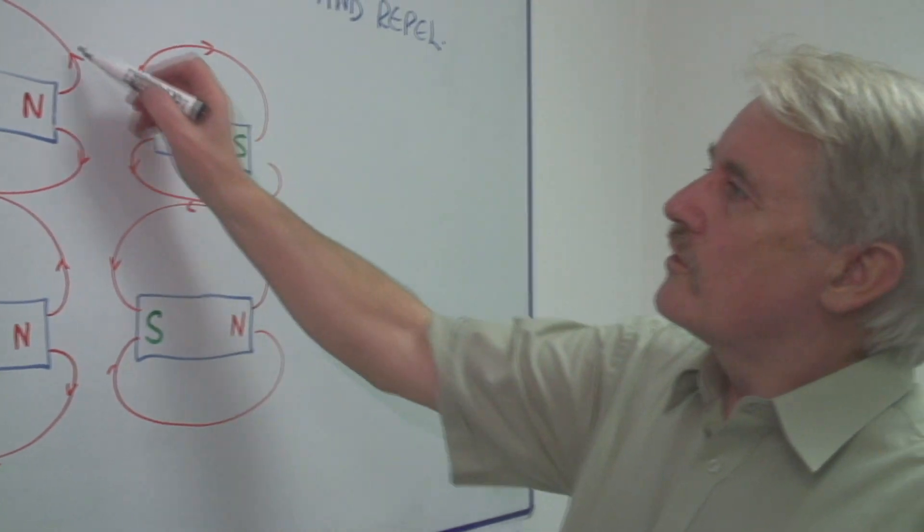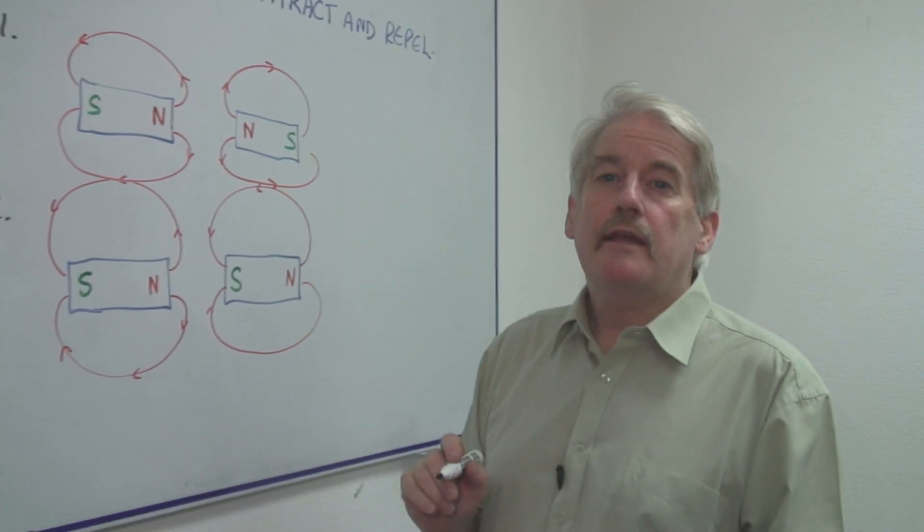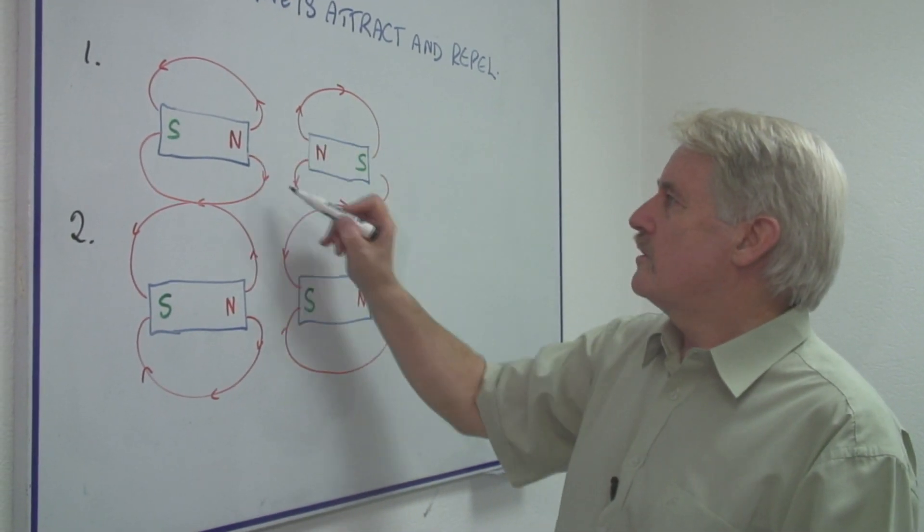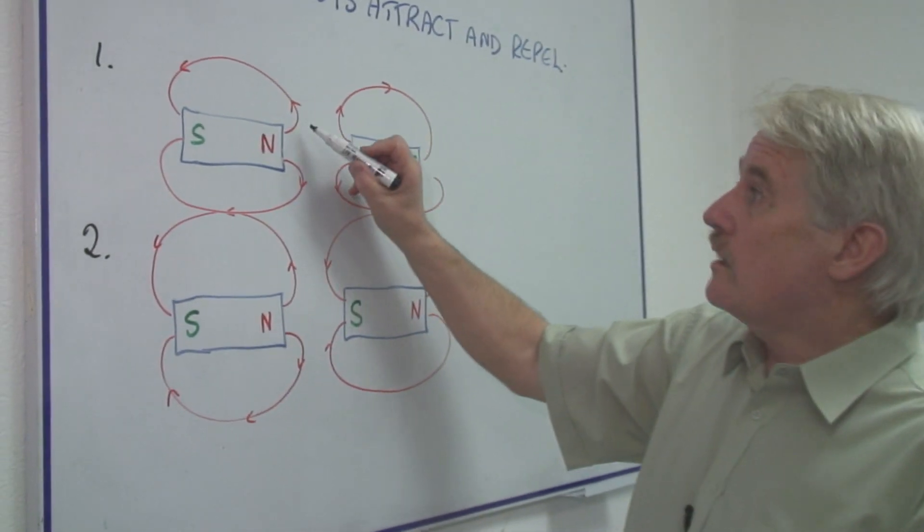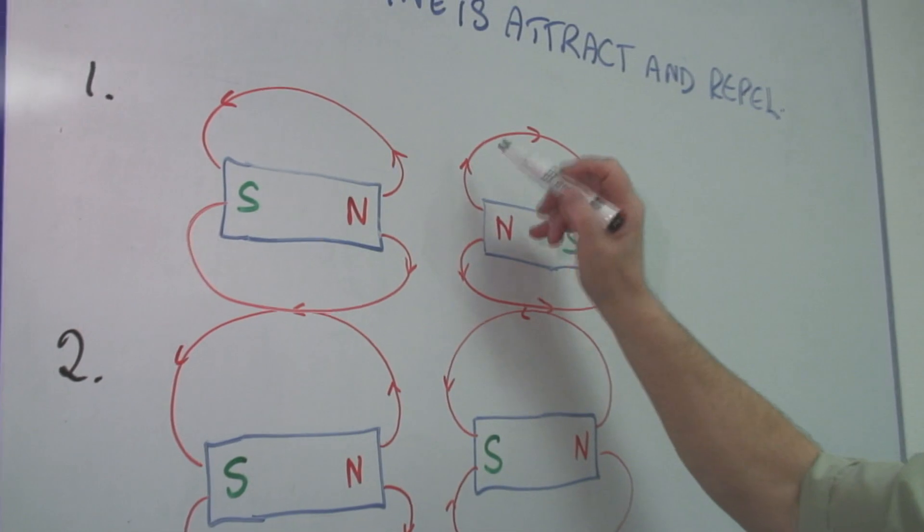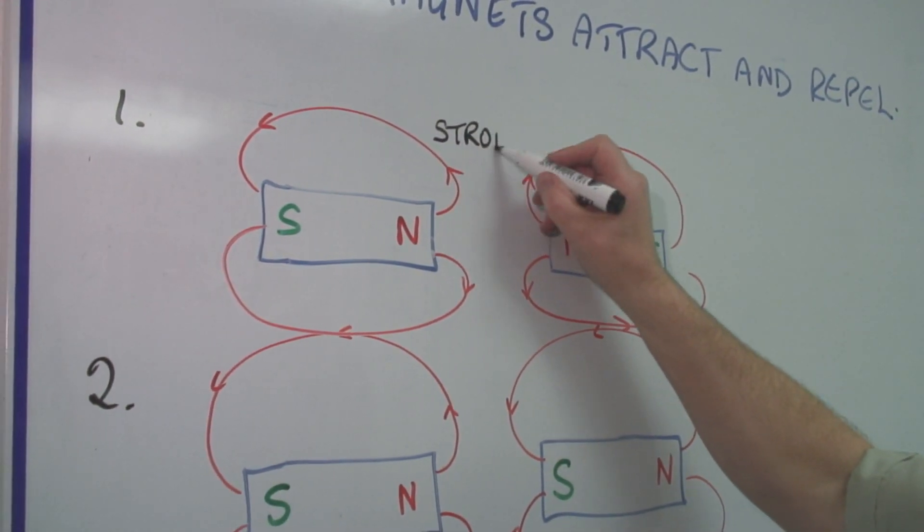Now, if you look at the red lines here, these red lines represent the magnetic field. And you can see that in the top diagram, you've got a situation where the arrows are in the same direction, so they reinforce and create a stronger field.